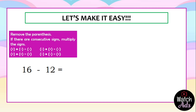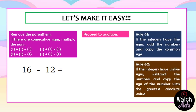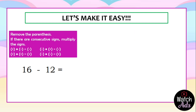Now, in multiplying the signs: positive and negative is equal to negative; negative and positive is equal to negative; positive and positive is equal to positive; negative and negative is equal to positive. To make this easier — for unlike signs, the answer is negative; for like signs, the answer is positive.